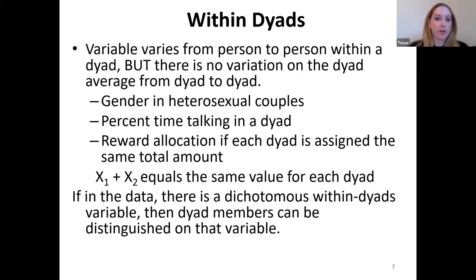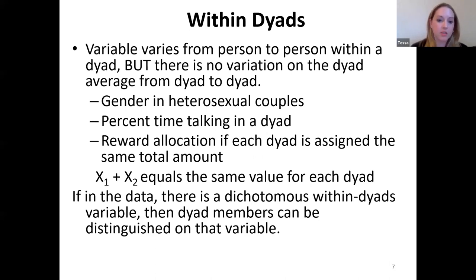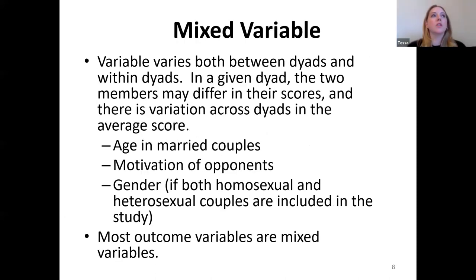Sometimes we have within-dyad variables. These variables vary from person to person within a dyad, but there's no variation in the dyad average from dyad to dyad. Examples include percent talk time or reward allocation, where each dyad is assigned the same total amount. If there's a dichotomous within-dyad variable in the data, the dyad members can be distinguished from each other on that variable.